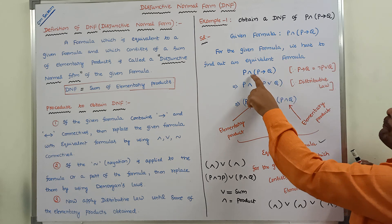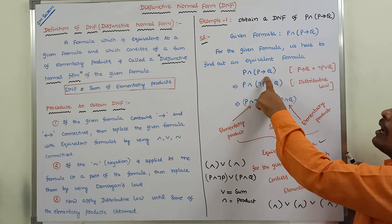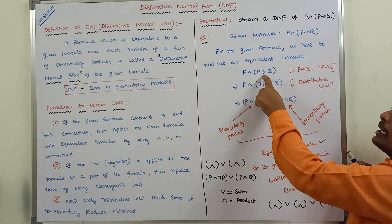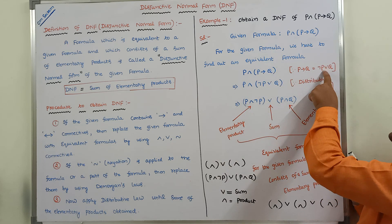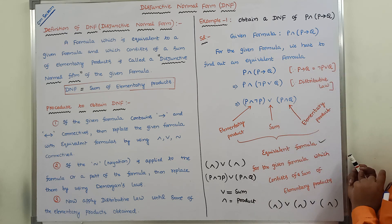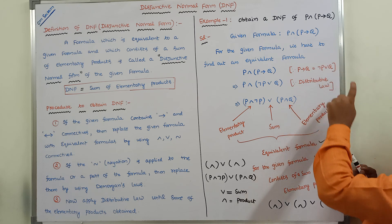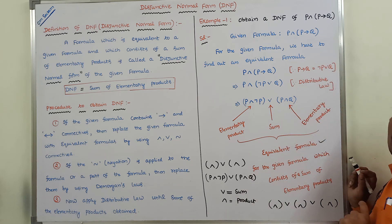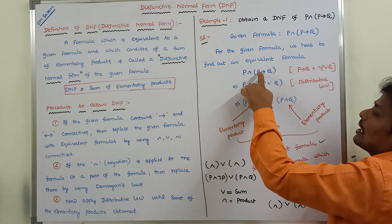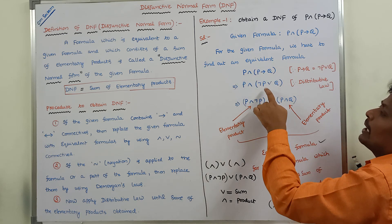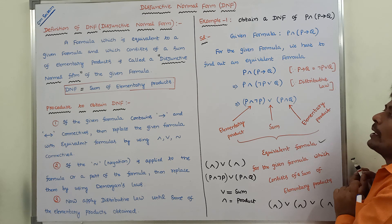P ∧ (P → Q) is the given formula. We already know that P → Q can be replaced as ¬P ∨ Q, because P → Q is logically equivalent to ¬P ∨ Q. So P ∧ (P → Q) becomes P ∧ (¬P ∨ Q).